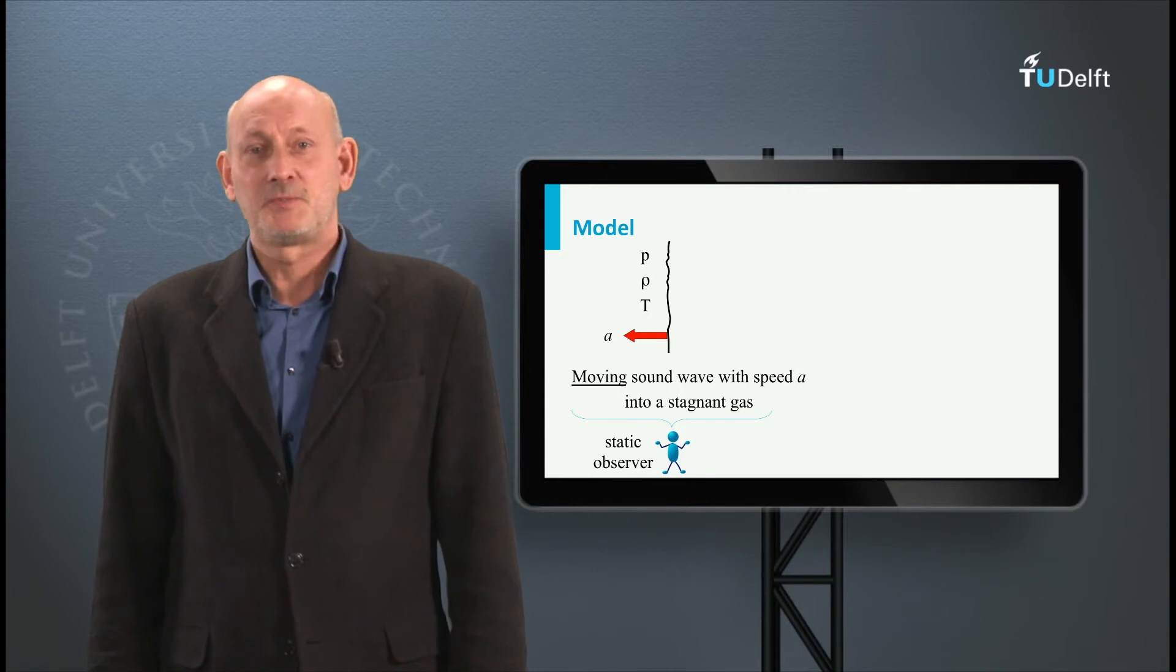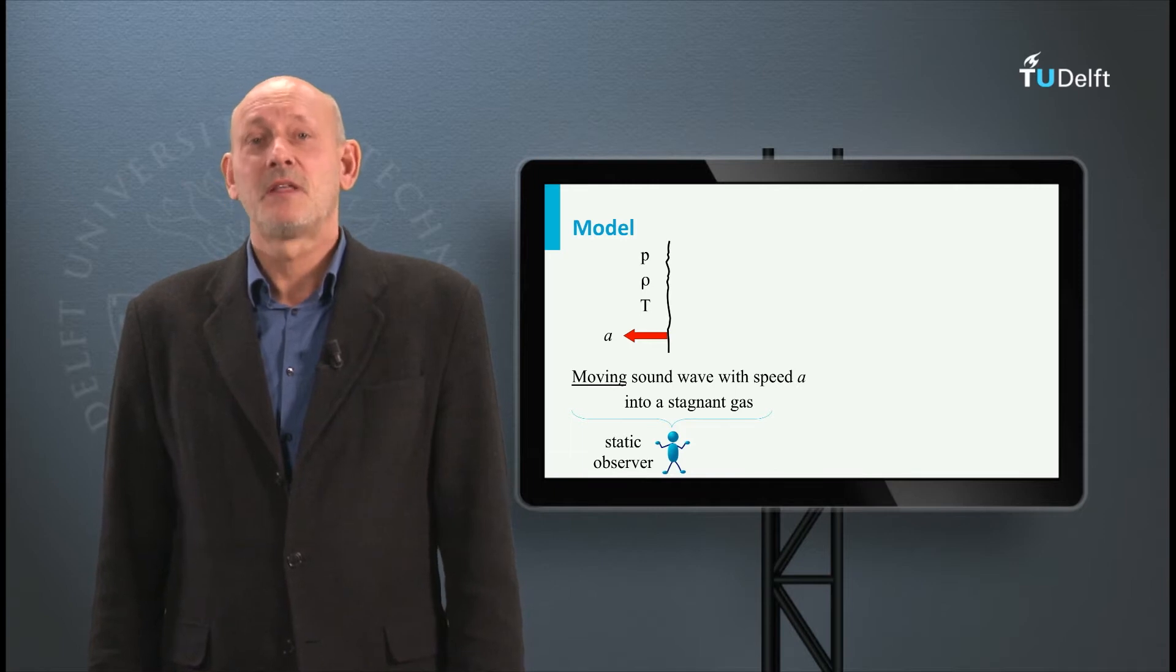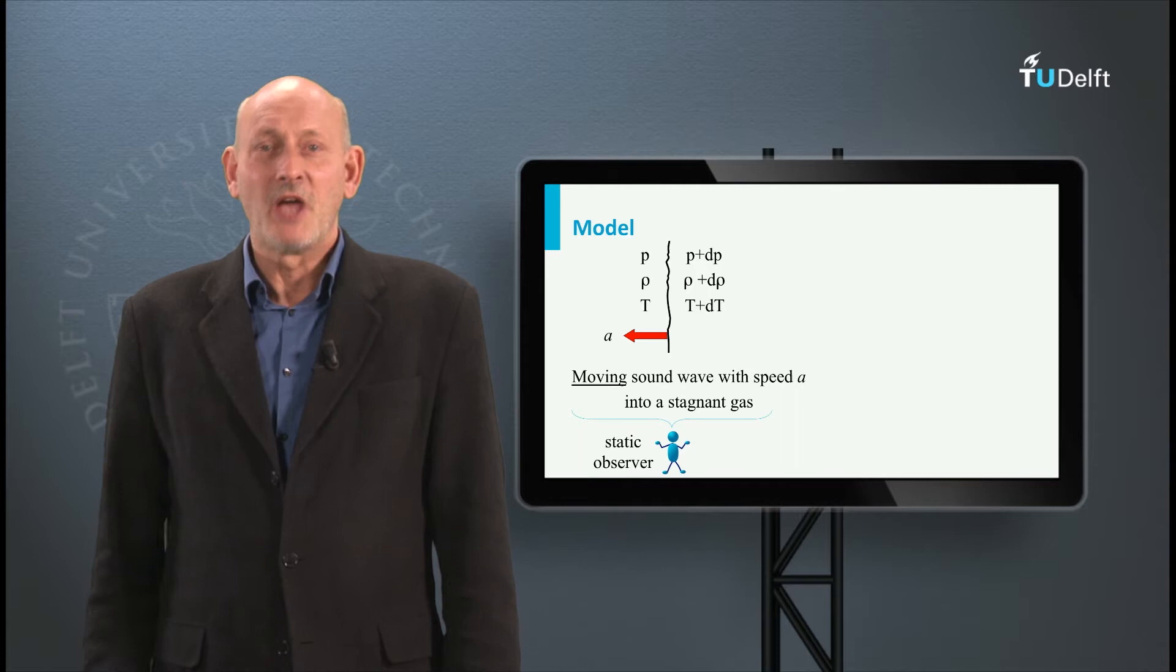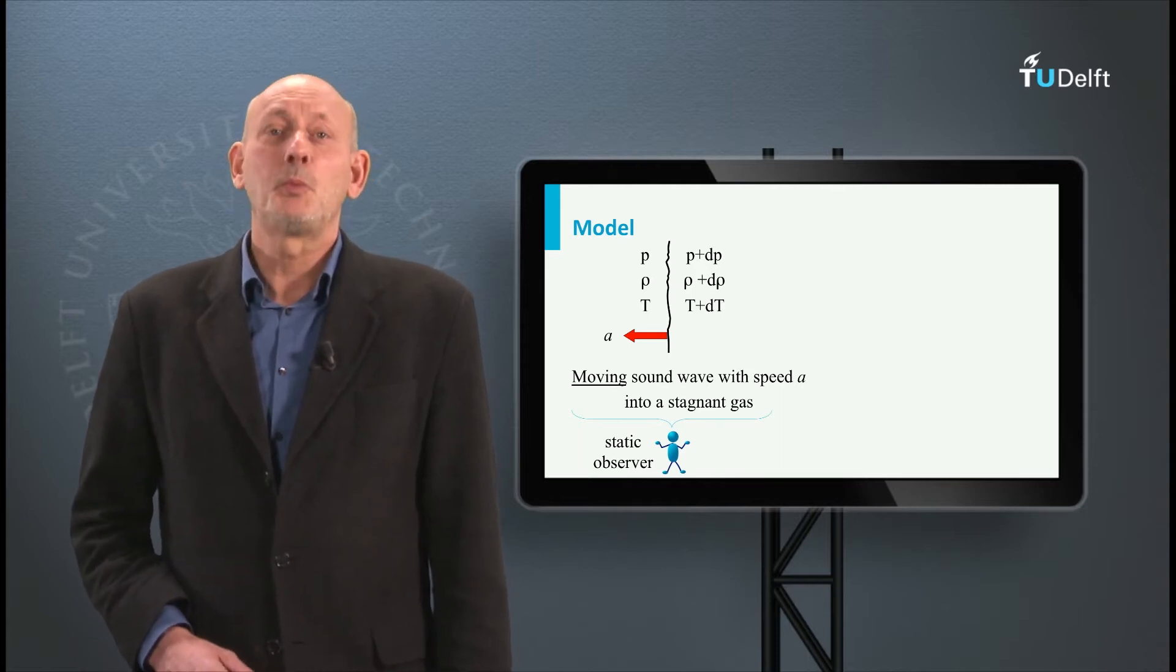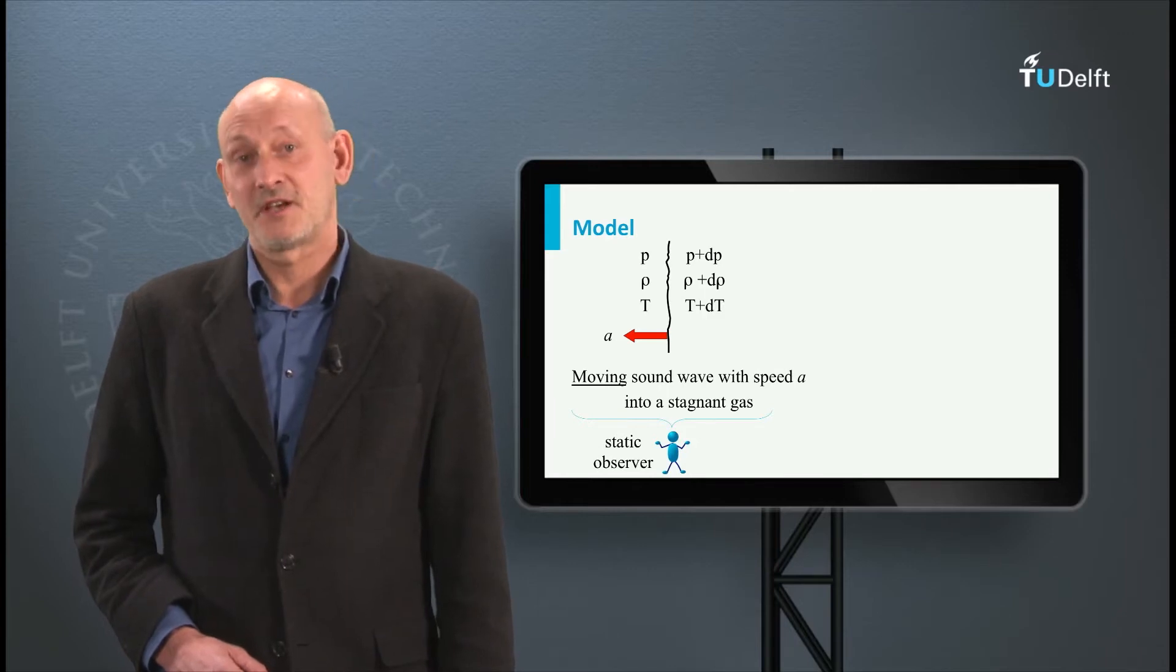The wave moves with the speed A. In front of the wave we have the properties of the gas, the static pressure P, the density rho and the temperature T. Behind the wave these properties have changed into P plus delta P, rho plus delta rho and T plus delta T.